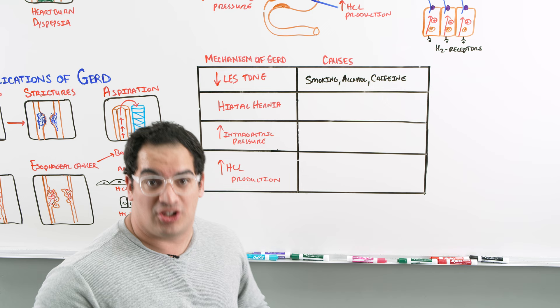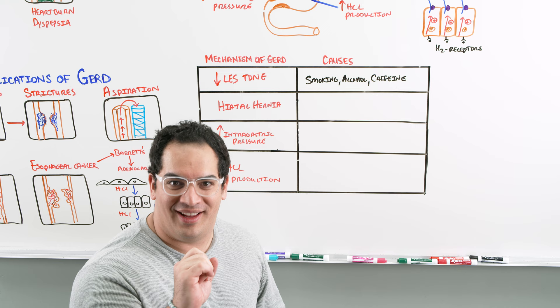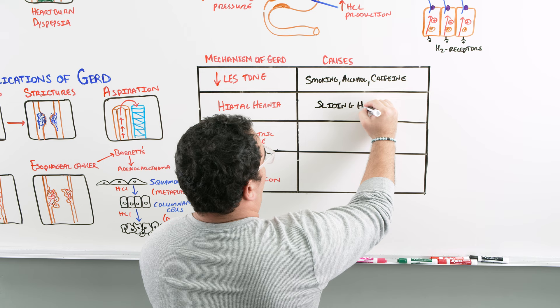For hiatal hernias, the most common type associated with GERD is sliding hernias — remember sliding hernias.